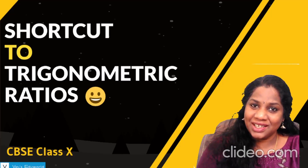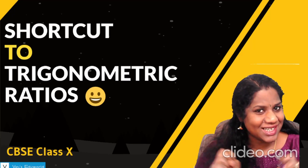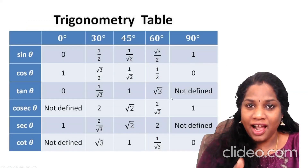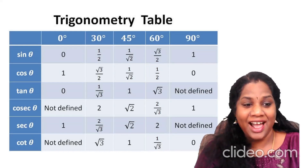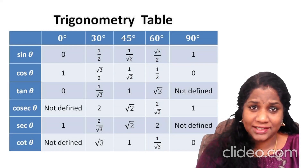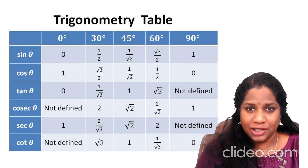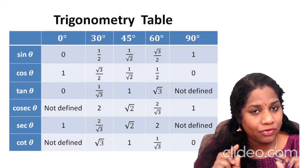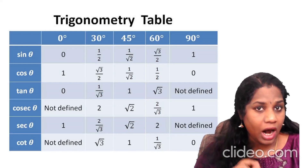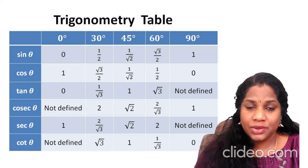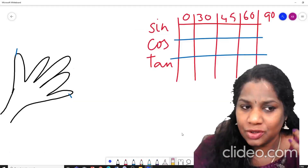Hi and welcome to today's session. Today we are going to discuss shortcuts to trigonometric ratios. Are you all familiar with this trigonometric table — sin theta, cos theta, tan theta, cosec, cot — for 0°, 30°, 45°, 60°, 90°? If you've finished this chapter in school, you must be remembering the values. But in case you forget, you should not lose a single mark. So here is a small simple trick to get these values.